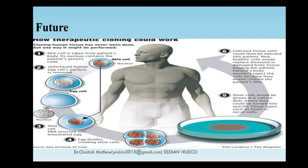How would therapeutic cloning work? Cloning of human tissue has never been done, but the process would involve taking a skin cell from the patient's body containing the nucleus with its genetic code, or taking an unfertilized human egg nucleus. The skin cell nucleus is fertilized with the enucleated egg cell. Skin cell DNA is inserted into the enucleated egg, a blastocyst appears, and at the blastocyst stage, these cells are taken for transplantation or cultured in vitro medium to grow embryonic stem cells, which can then be used for further purposes.